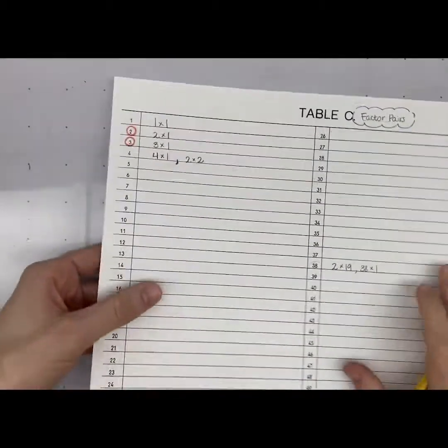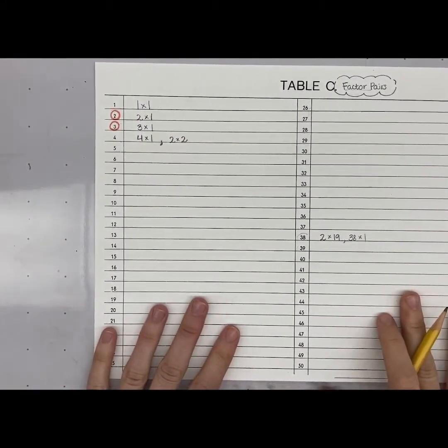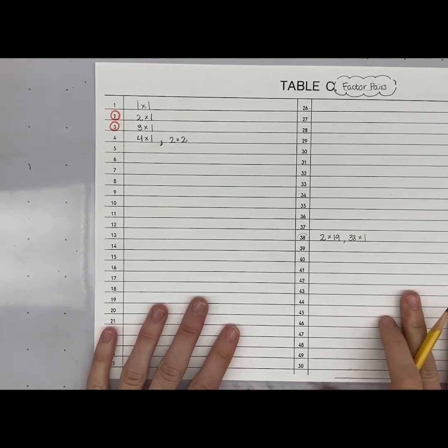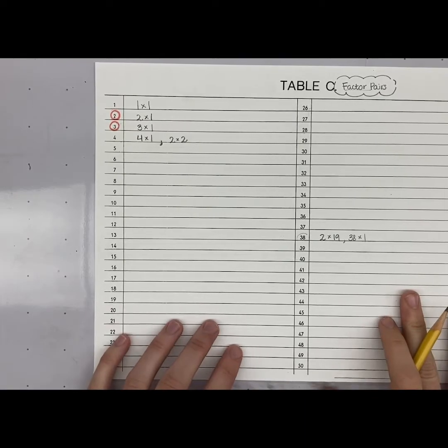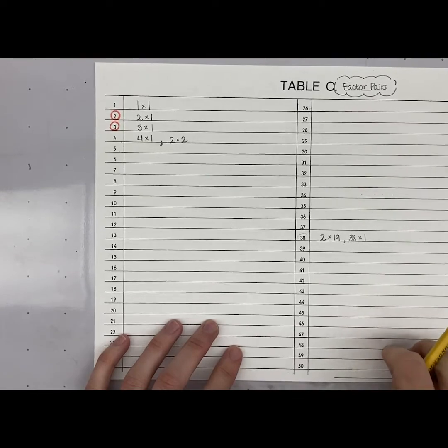This is big work. I suggest doing a little bit each day. Maybe doing, I don't know, 10 a day or... Yeah, I'd say like 10 a day. And you do, if you have table A and B, it makes table C much, much easier.